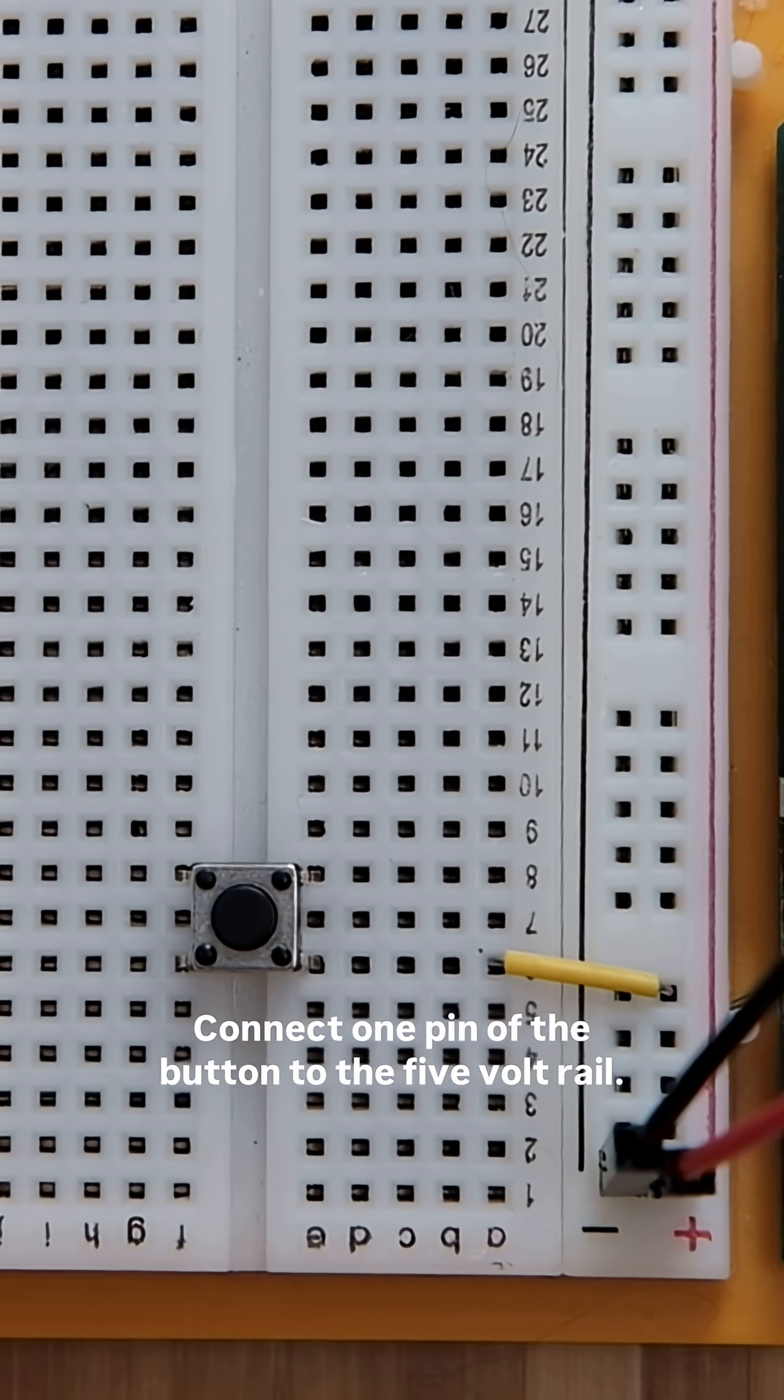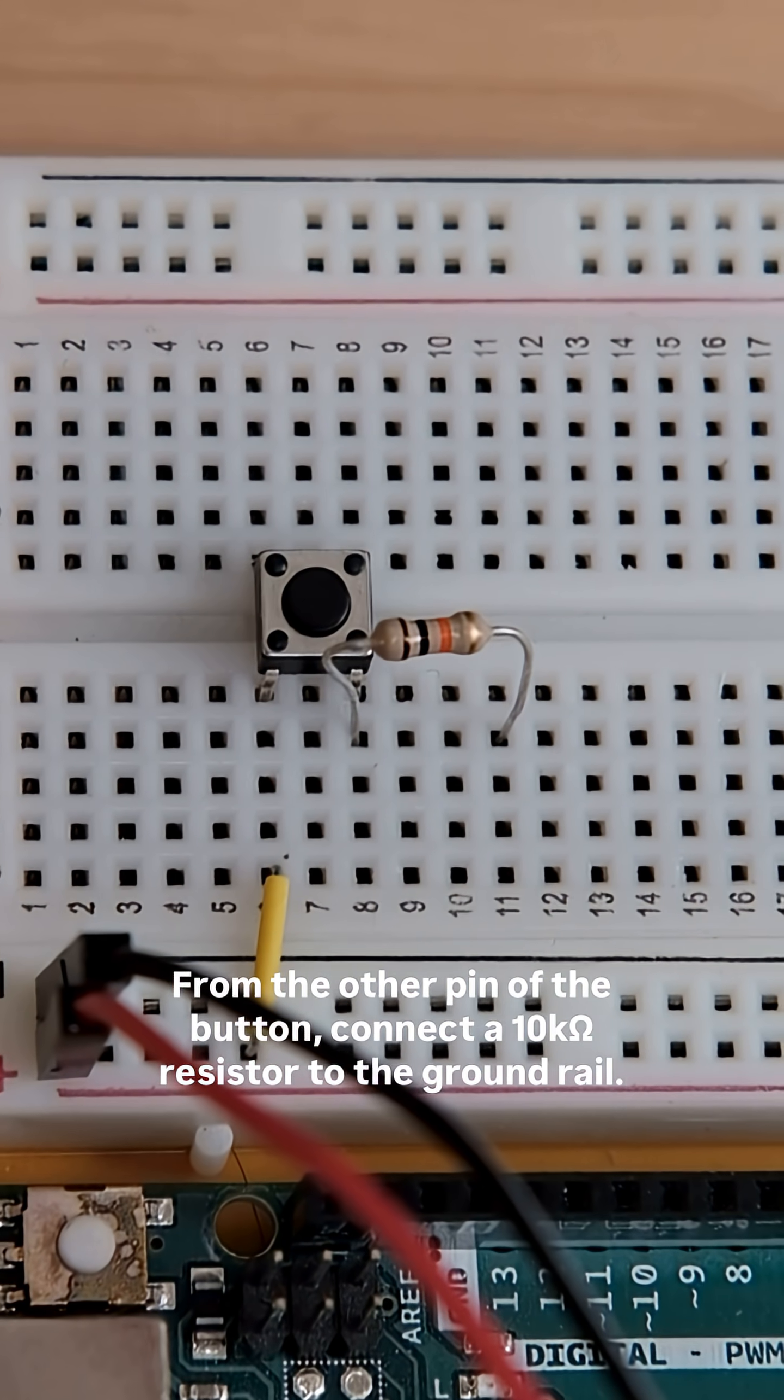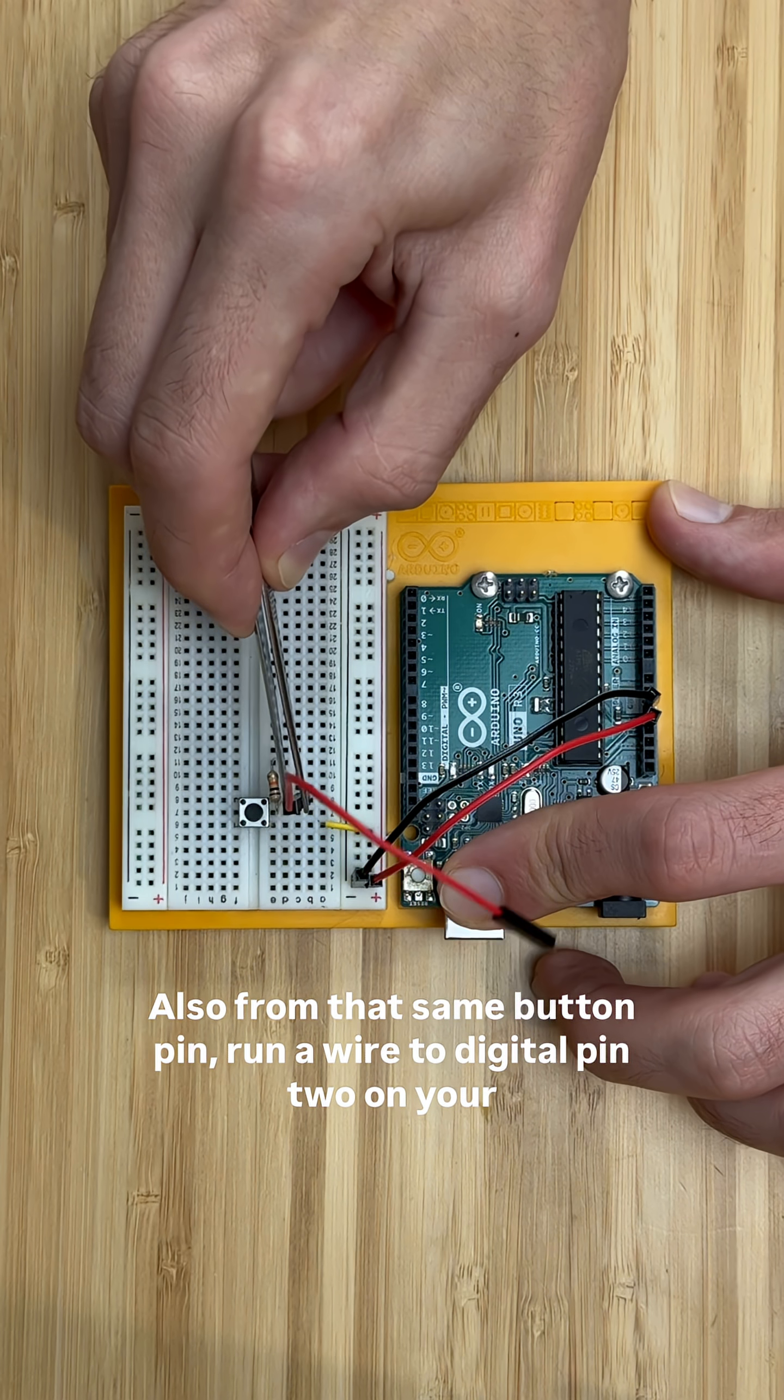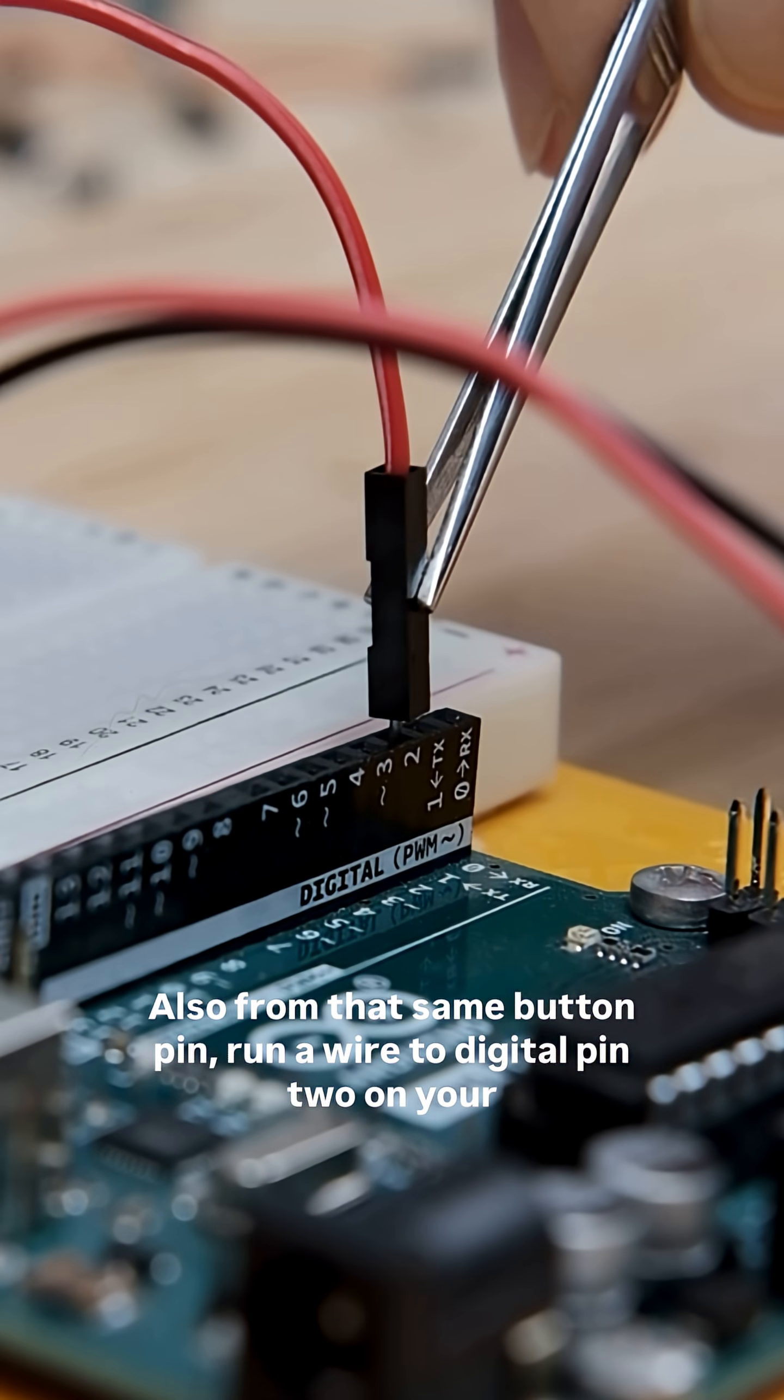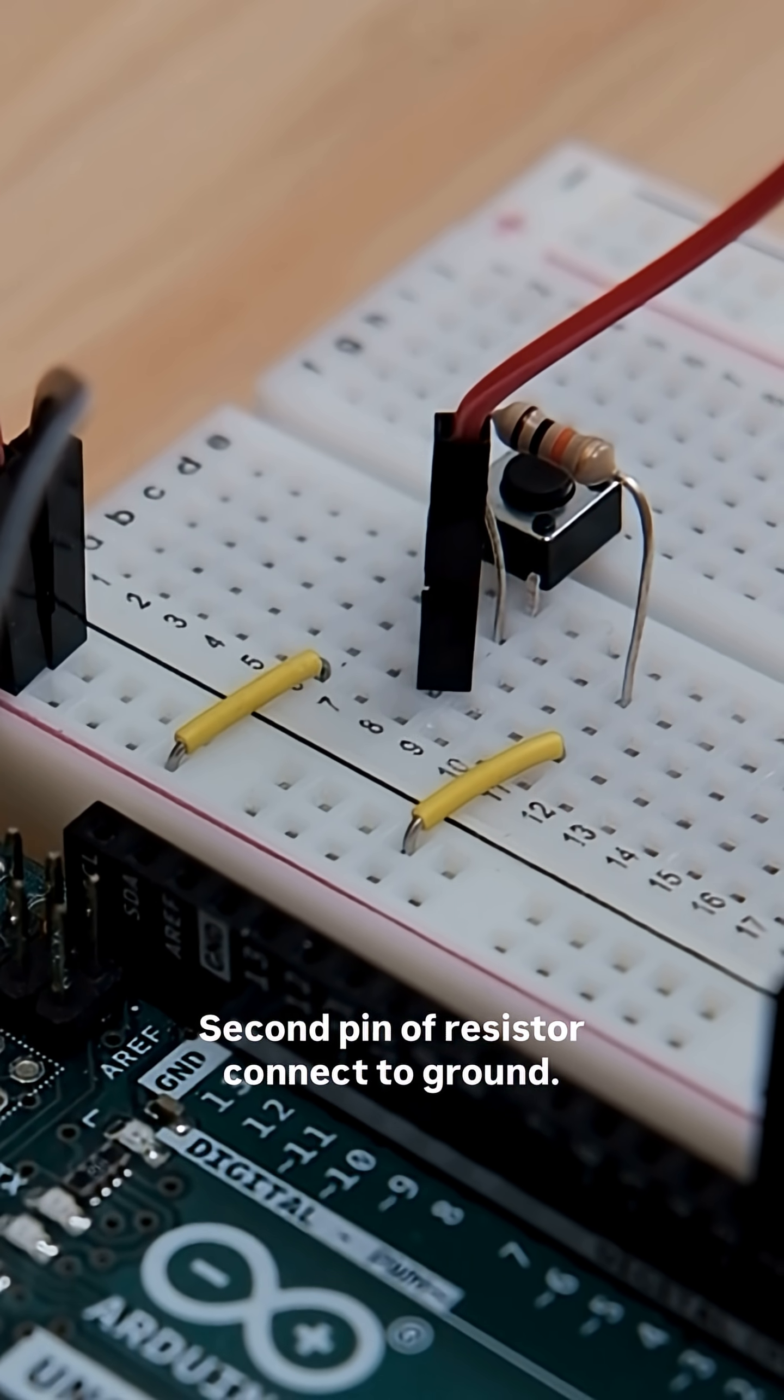Connect one pin of the button to the 5 volt rail. From the other pin of the button, connect a 10k ohm resistor to the ground rail. Also from that same button pin, run a wire to digital pin 2 on your Arduino. Second pin of resistor connect to ground.